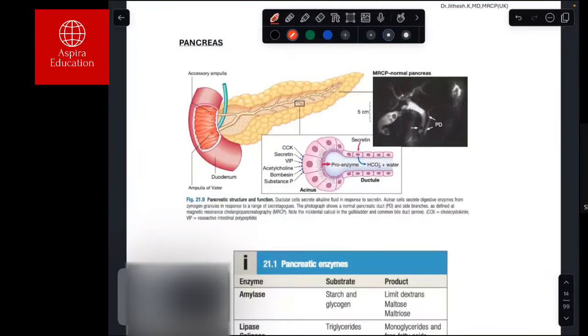This is pancreatic physiology. The pancreas has a head, body, and tail. The tail part has the endocrine part, while the exocrine part is predominantly the body and the head.